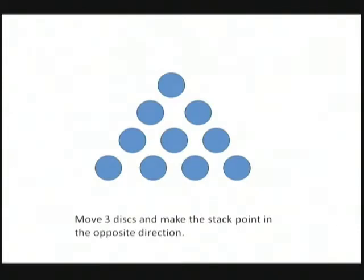So here's the first one. We've got ten discs that are stacked like a triangle or a pyramid. They are pointing in one direction - we'll say they're pointing up because here's the apex of the triangle. What we want to do is move only three discs so that it's now pointing in the other direction. So how are we going to do it?